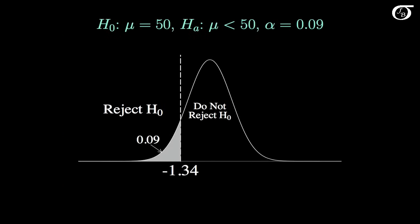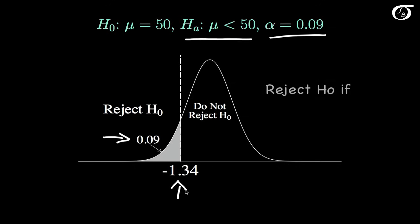Here I've plotted out the standard normal curve. Our alpha level is 0.09, and our alternative hypothesis is that mu is less than 50, so we put the entire alpha level in the left side of the distribution. From software or the standard normal table, the z value with an area of 0.09 to the left is, to two decimal places, minus 1.34. So we reject the null hypothesis if the z value from our sample is less than or equal to minus 1.34.